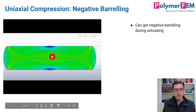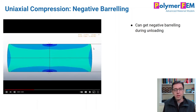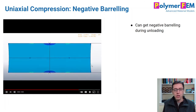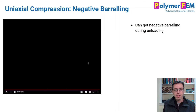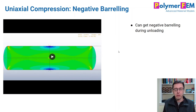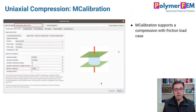This can also be shown in simulation. Here is the compression — you see the specimen barrel out. But now when I unload, if you look carefully, you see that there is a negative barreling during unloading. That negative barreling is what's causing this hysteresis effect. The specimen actually sucks inward in the middle during unloading of the test cycle. And that's something you can also see experimentally if you run these experiments, as well as through simulations.